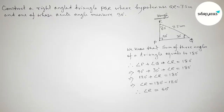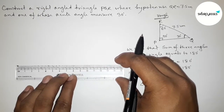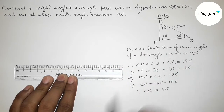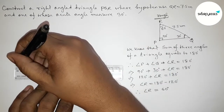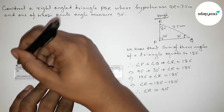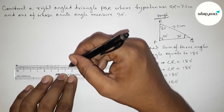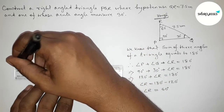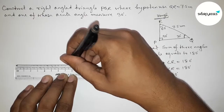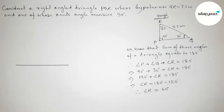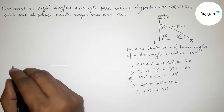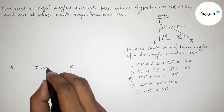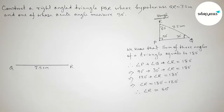Now I am going to apply this concept to construct the right angle triangle PQR. First, drawing the hypotenuse of 7.5 centimeters — starting from zero to 7.5 centimeters. Taking point Q on the left end and point R on the right end, so QR equals 7.5 centimeters.